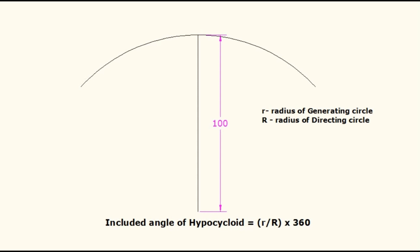In this example, generating circle radius is taken as 25 mm and directing circle radius is taken as 100 mm. Likewise, angle theta equals 25 divided by 100 times 360, which is 90 degrees.